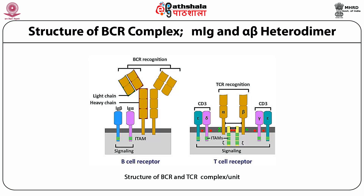The BCR is not only made up of membrane antibody — it also has Igα and Igβ peptide chains. The membrane antibody contains the BCR recognition component and a heavy chain with a small cytoplasmic tail, which helps anchor it into the plasma membrane. Because the cytoplasmic tail is small, it cannot deliver the signal into the cell interior. It requires Igα and Igβ, which have long cytoplasmic tails with ITAM, helping signal transduction upon BCR-antigen recognition at the Fab fragment, ultimately activating the B lymphocyte.